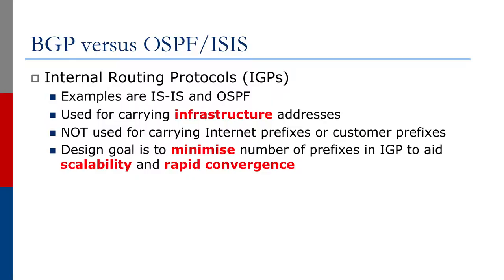As seen in the Introduction to Routing video series, we talked about the differences between IGPs and EGPs. What is BGP for, and how does it compare to OSPF or ISIS? OSPF and ISIS are internal routing protocols used for carrying infrastructure addresses, not for carrying internet or customer prefixes. The design goal is to minimize the number of prefixes in the IGP to aid scalability and rapid convergence.